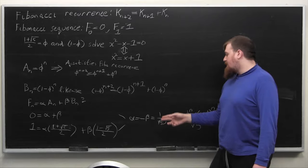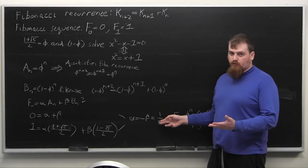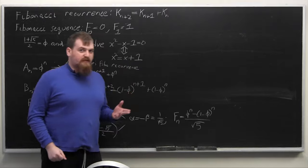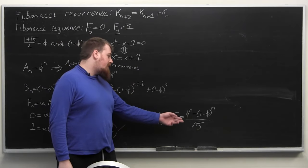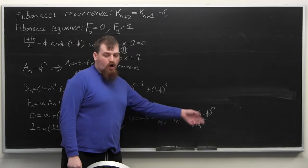We can solve these and get that alpha equals negative beta equals 1 over root 5, which means that the explicit representation for the Fibonacci numbers is phi to the n minus 1 minus phi to the n, all over root 5.